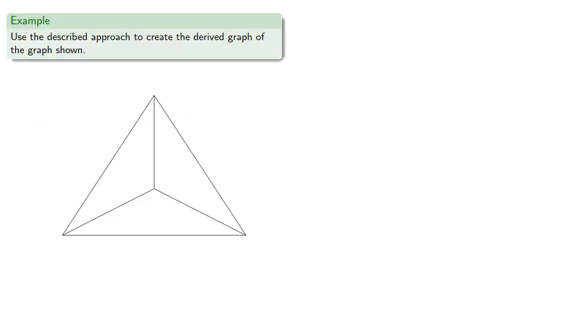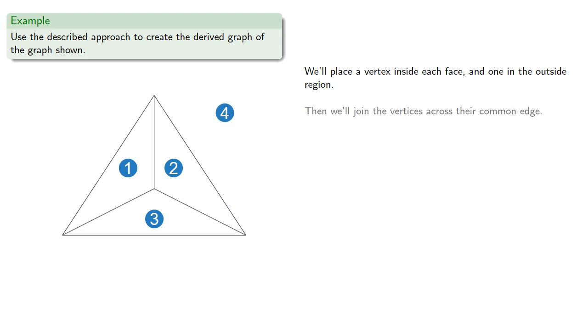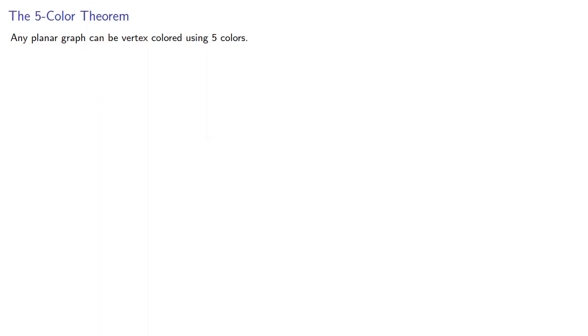So let's use the described procedure to create the derived graph of the graph shown. So we'll place a vertex inside each face and one on the outside region. Then we'll join the vertices across their common edge, and note that the common edge to the outside region can be bent a little bit so we don't cross edges.